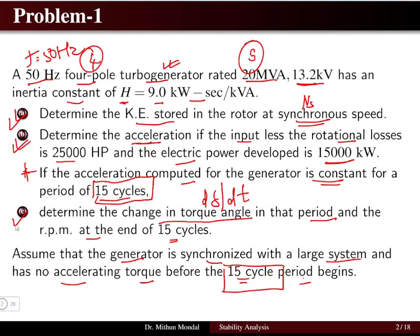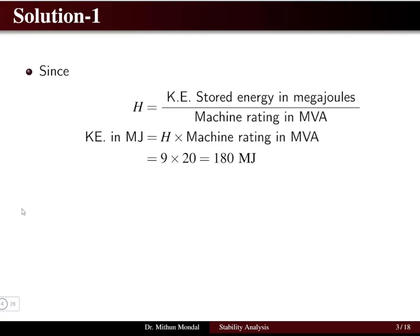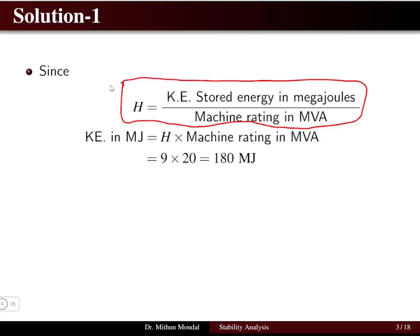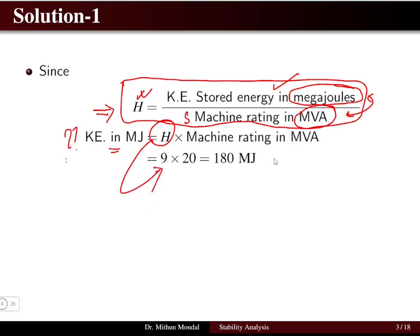Now for the solution. The key equation relating the inertia constant H to kinetic energy is: H = kinetic energy in megajoules divided by machine rating in MVA. Given H = 9 and machine rating = 20 MVA, multiplying the two gives kinetic energy = 180 megajoules stored in the rotor.